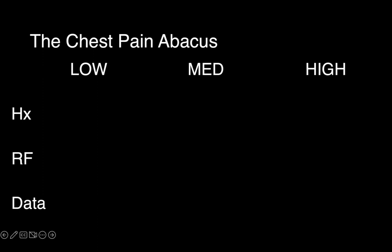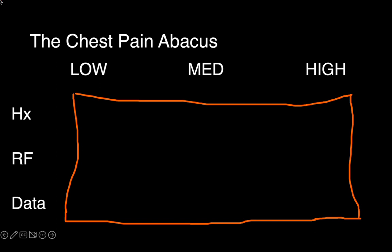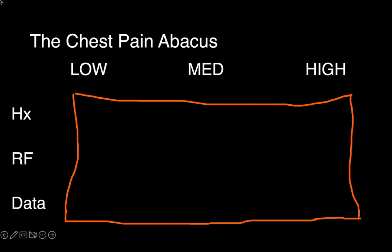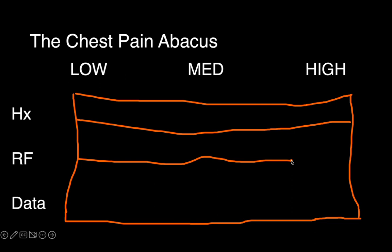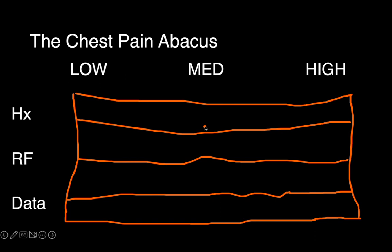With that in mind, I'd like to outline the chest pain abacus. Thinking through all the risk factors and categories we talked about, you'll essentially place patients into three main categories for each of the three boxes — patient history, risk factors, and data. For each, you divide them into low, intermediate, or high risk. For trickier patients, I'll even draw these out. Eventually you'll have a picture for a particular patient, and we'll go through specific examples of how you might choose the next best test based on what you identify.